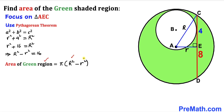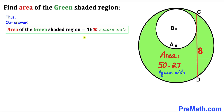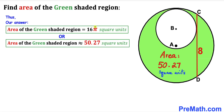Rearranging, uppercase R squared minus lowercase r squared equals 16. Recalling from our previous step, the area of the green shaded region equals pi times (R squared minus r squared). Since R squared minus r squared equals 16, we replace that expression with 16. Therefore, the area of the green shaded region is 16 pi square units. If we substitute the value of pi, the area is approximately 50.27 square units.